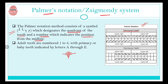In the Palmer system, the numbering does not start from the upper right corner — it starts from the midline. So within each quadrant, the numbering goes: 1, 2, 3, 4, 5, 6, 7, 8 from the midline outward. This is repeated for all four quadrants, with the four symbols differentiating the quadrants. Adult teeth are numbered from 1 to 8.